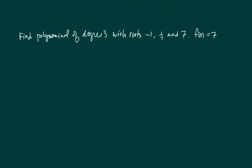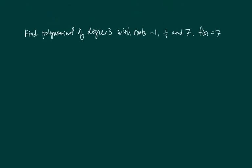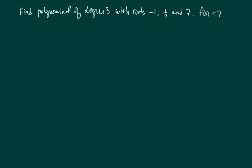Here's a very typical question that shows up on Algebra 2 exams. Find a polynomial of degree 3 with three given roots, and we're given f(0) equal to 7. So let's do a quick analysis and solve this one.